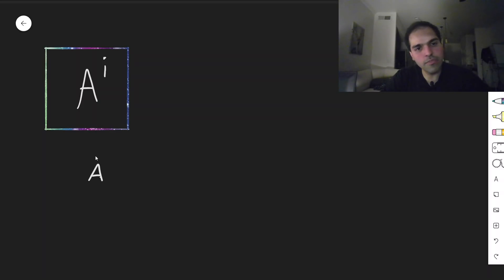More specifically, consider the matrix A to be minus 4, 10, minus 3, 7, and let's try to calculate A to the i with this matrix.